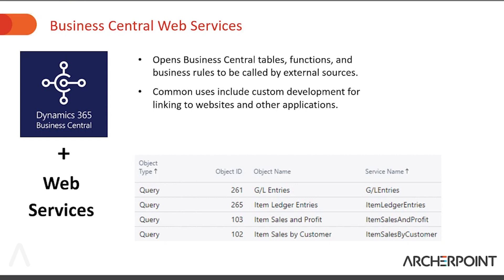The last area is Business Central Web Services. If you do need to create a custom solution — custom development for specific portals, external websites, or other applications — you can use the out-of-the-box web services to expose the objects in Business Central, then write your JSON AL-related code and call those to link to those custom applications.